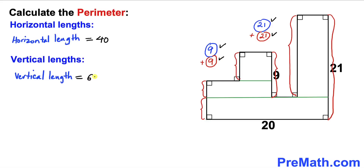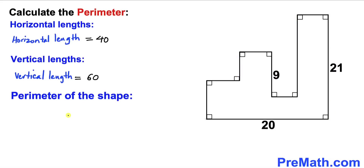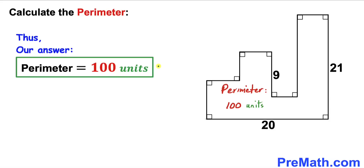Our total vertical length is going to be 21 plus 21 plus 9 plus 9 plus 9, which gives us 60 units. Therefore, the perimeter of this shape is the total sum of horizontal and vertical lengths: 40 plus 60 equals 100 units. The perimeter of this given shape is 100 units — that's our final answer. Thanks for watching and please subscribe to the channel for more videos.